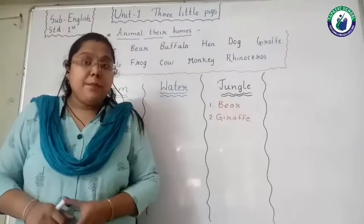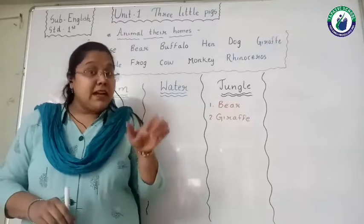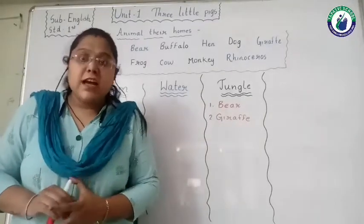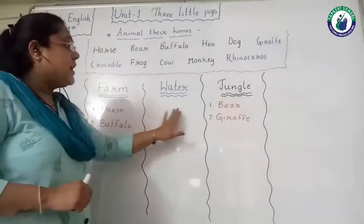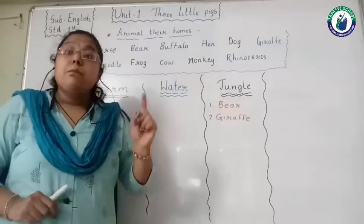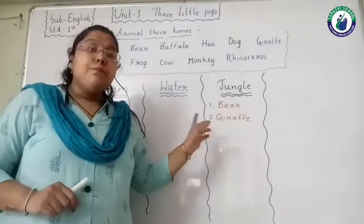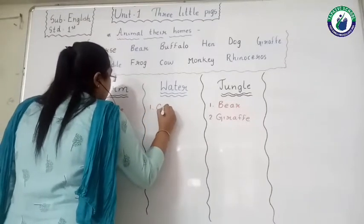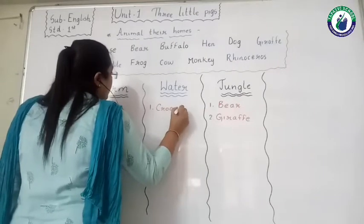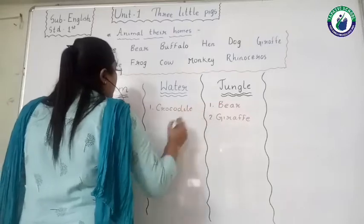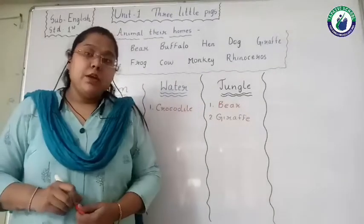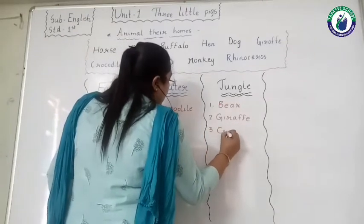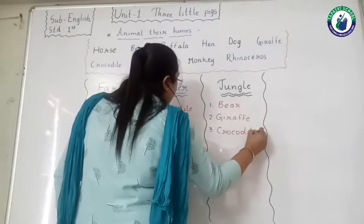Now — C-R-O-C-O-D-I-L-E, crocodile. Crocodile means magar. The crocodile lives in water and also on land, and it is found in the jungle — not near our houses. So we will write crocodile in both the water column and the jungle column. Write C-R-O-C-O-D-I-L-E in water animals and also in jungle animals.